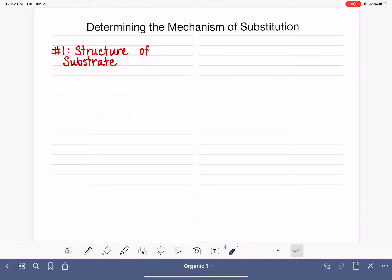So we're going to start with the most important predictor, which is the structure of the substrate. The substrate is the electrophile, the thing that is being attacked, the thing that has the leaving group, the alkyl halide, whatever terminology you want to use. They're typically alkyl halides, but the leaving group is not always a halogen, so it's not always an alkyl halide.